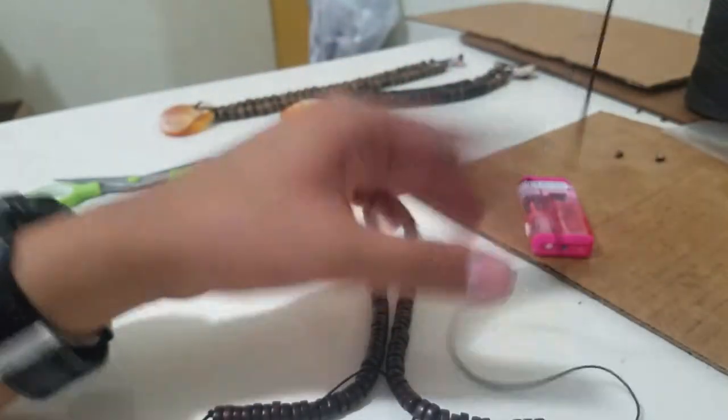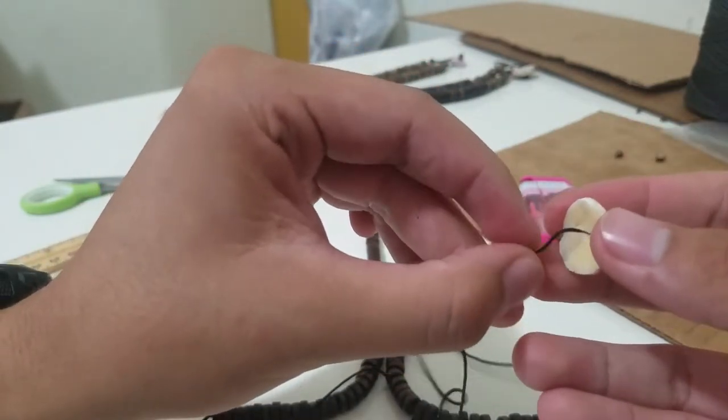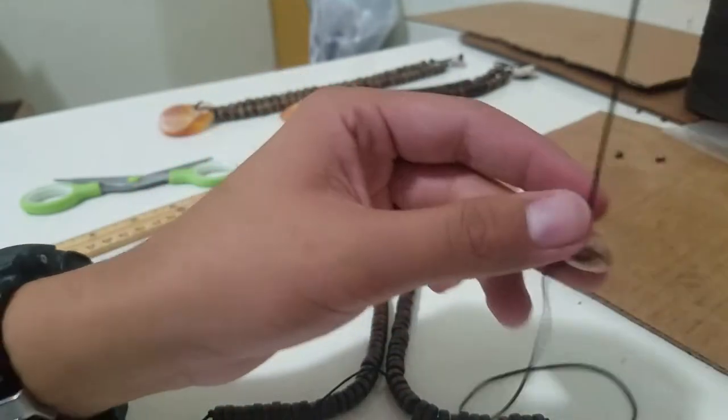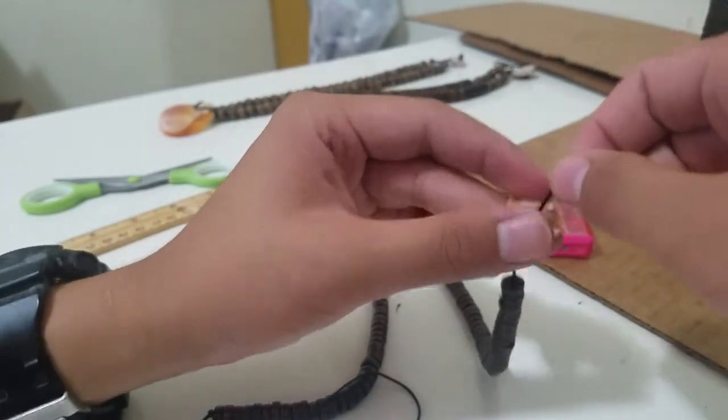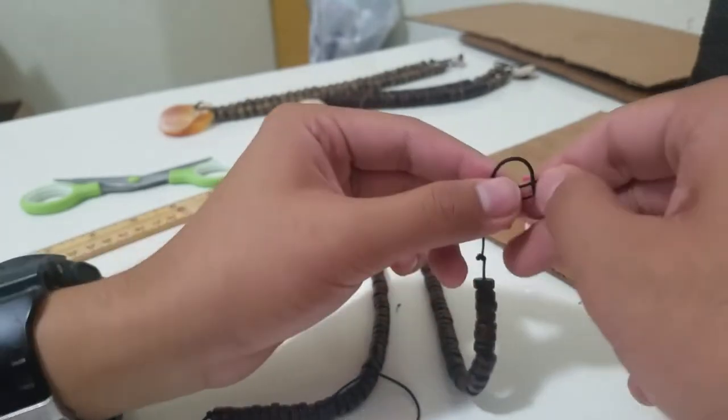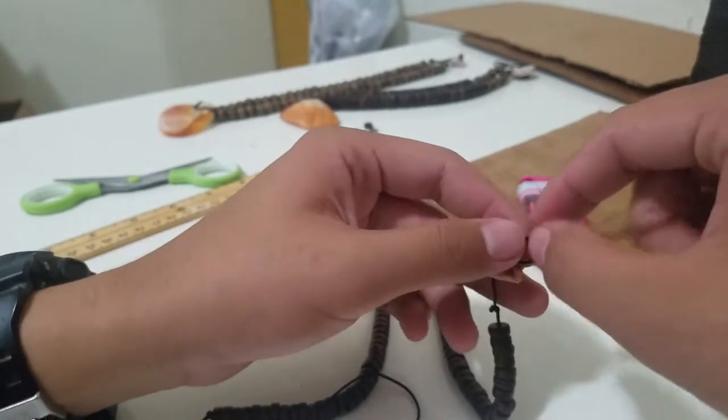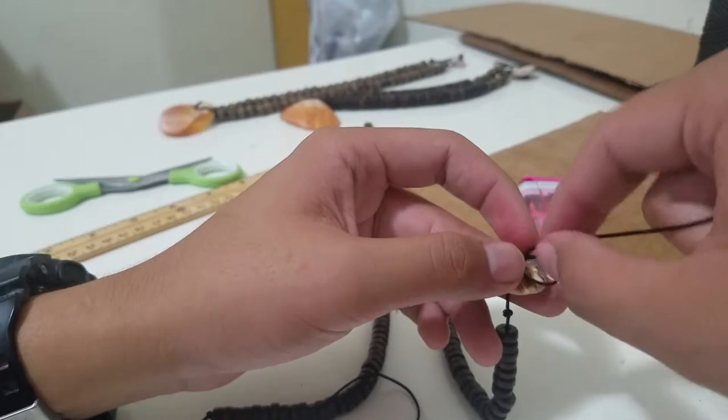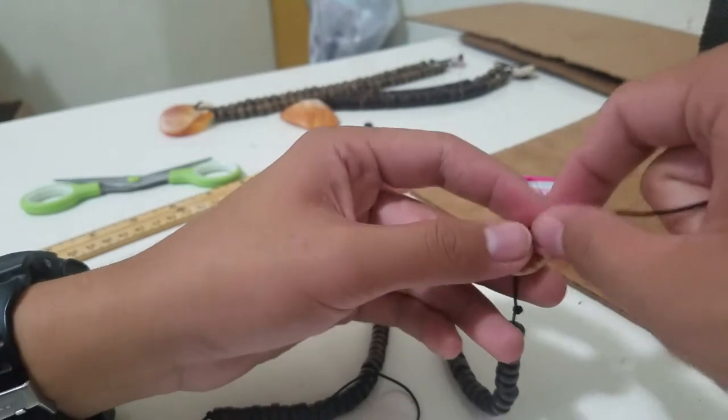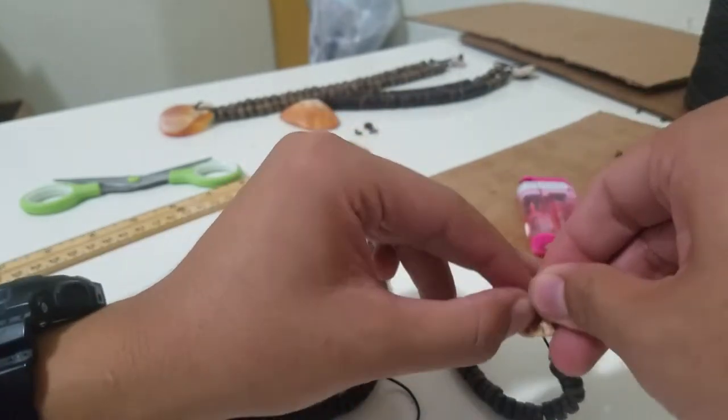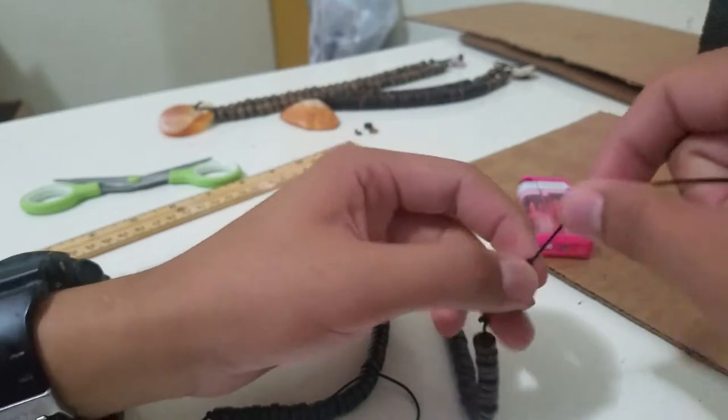Now I'm going to put the clasp or lock on, just like that. Then on top of this clasp or lock, I'm going to tie another double knot as close as I can. Okay, double knot.